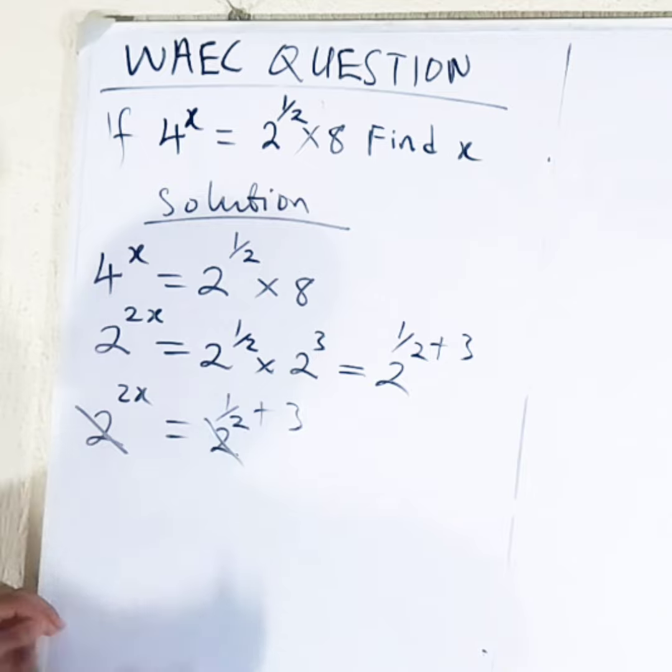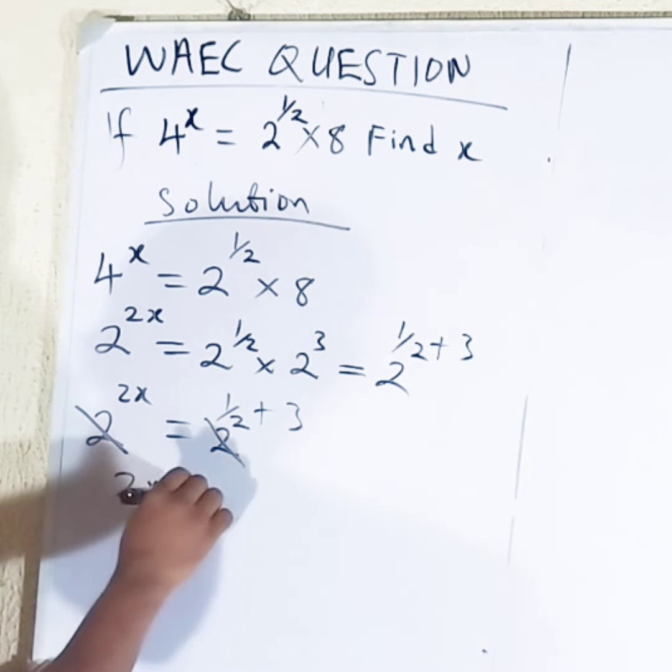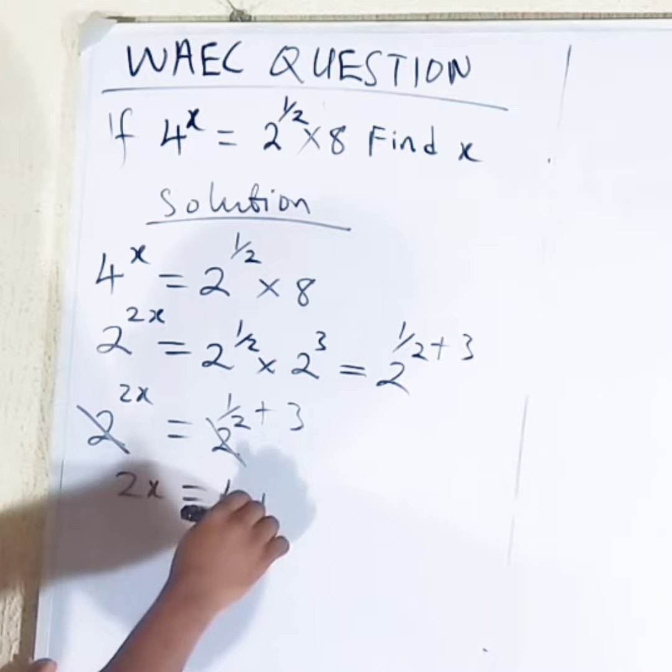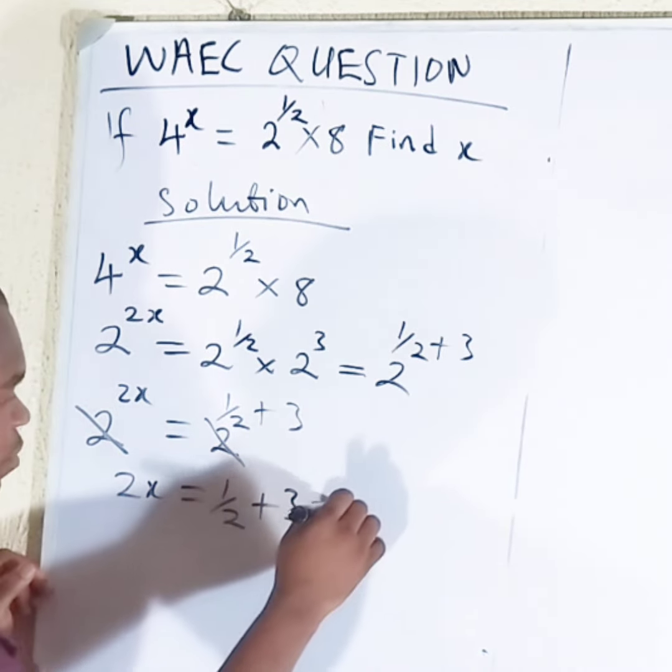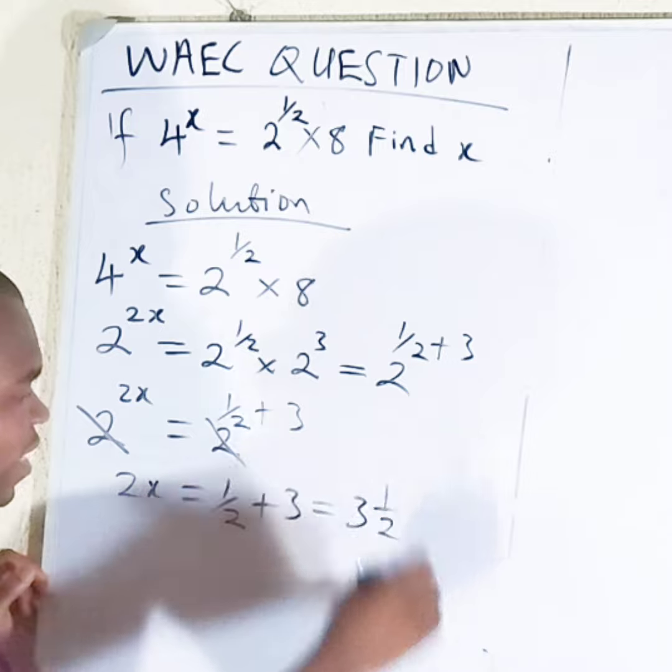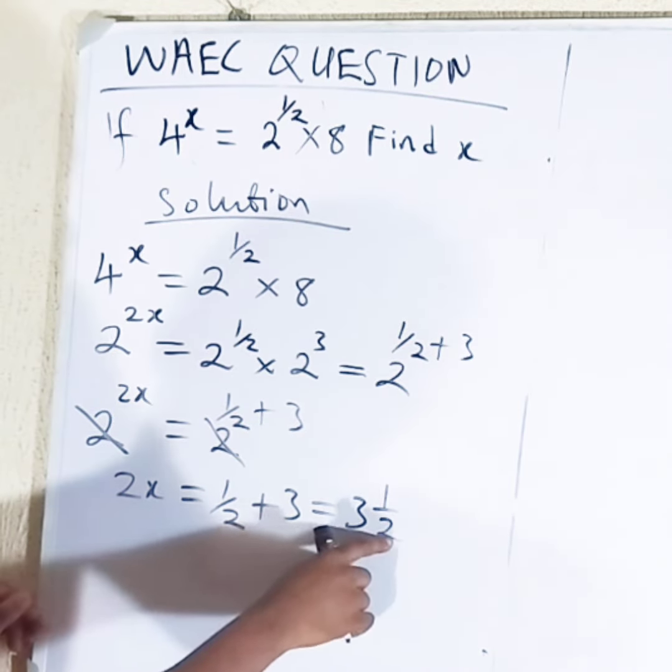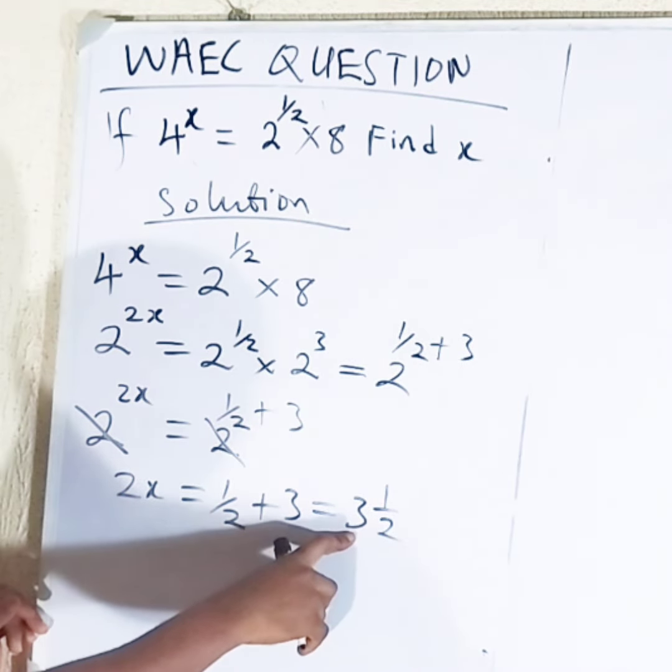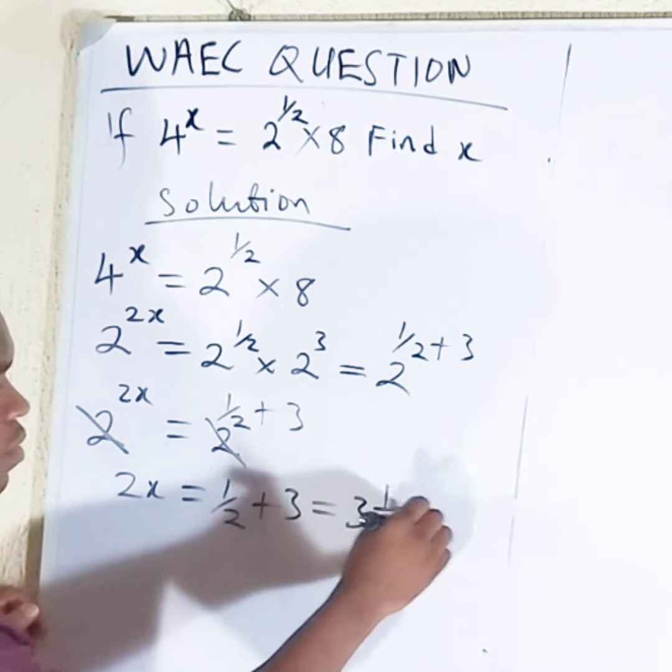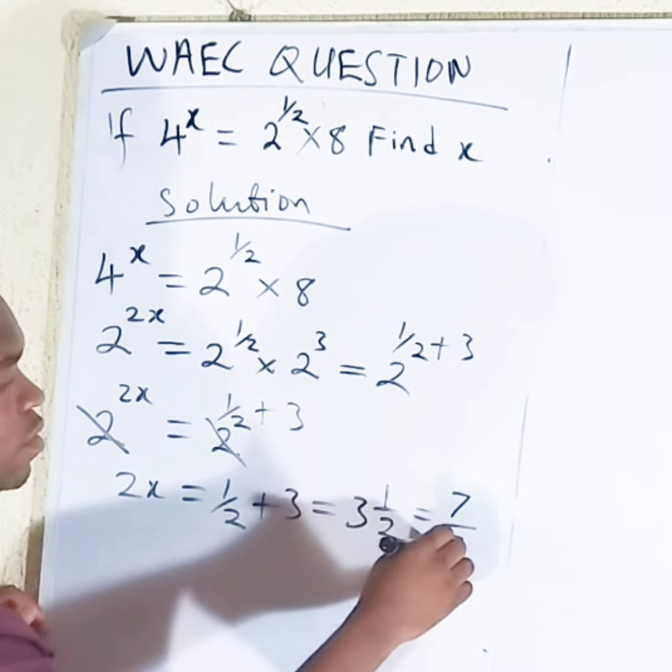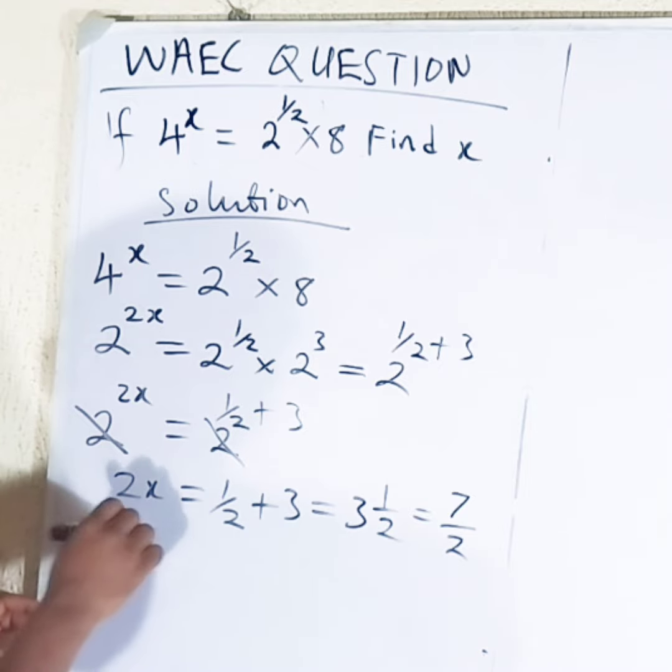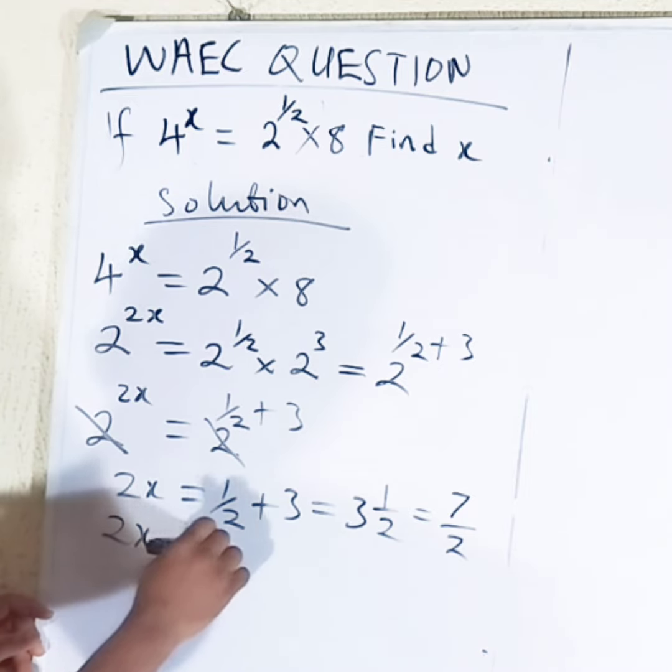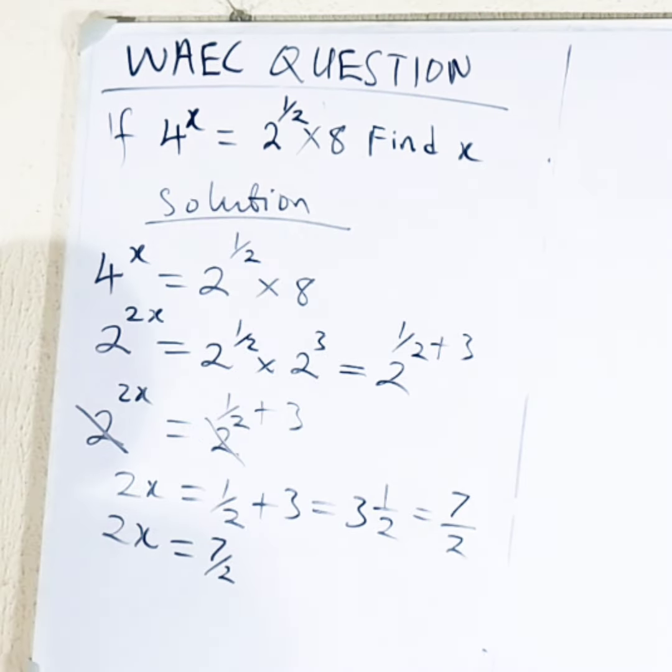The base, we cancel the base because they are the same. So we have 2x is equal to half plus 3. But half plus 3 will just give you 3 and half. Then 2 times 3 will give you 6, 6 plus 1 will give you 7 over 2. So finally I have 2x is equal to 7 over 2.